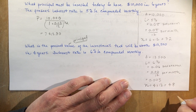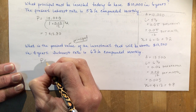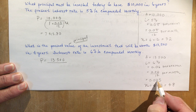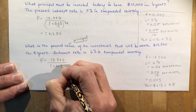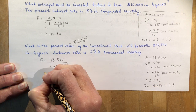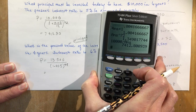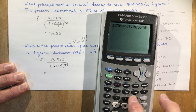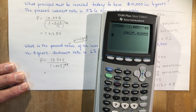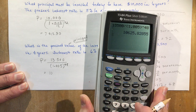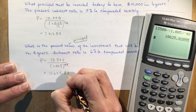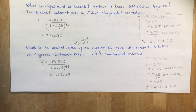My n is four years monthly, so four times twelve equals 48. Now plug it in: P equals thirteen thousand five hundred divided by 1.005 to the power of 48. Doing that on the calculator: thirteen thousand five hundred divided by 1.005 to the power of 48 gives ten thousand six hundred and twenty five dollars and eighty three cents. Always round to two decimal places — we're talking dollars and cents.